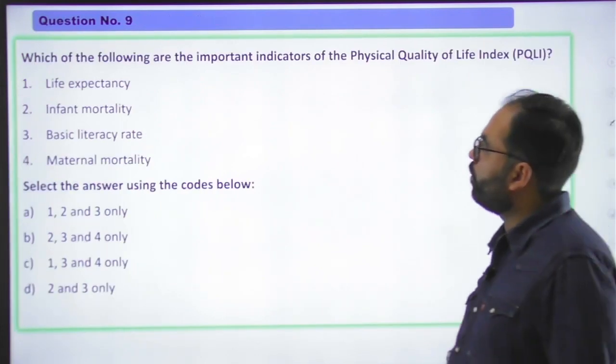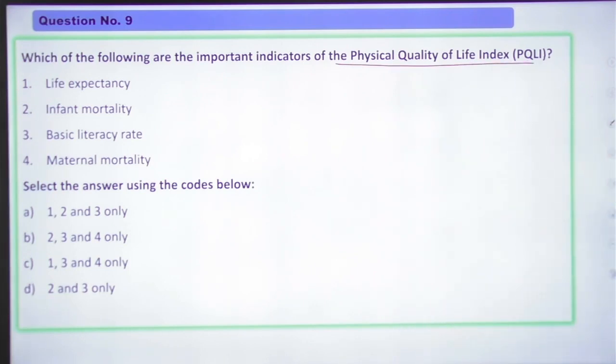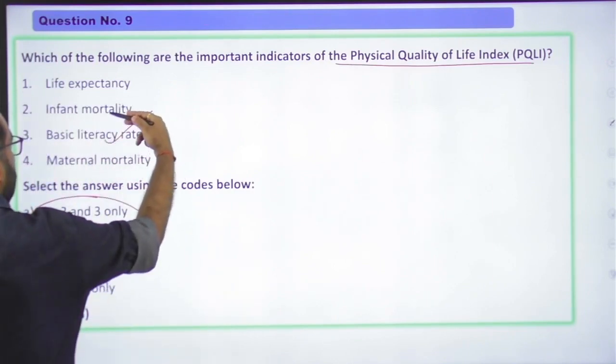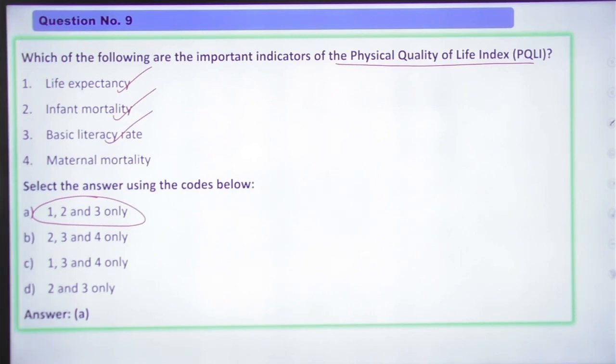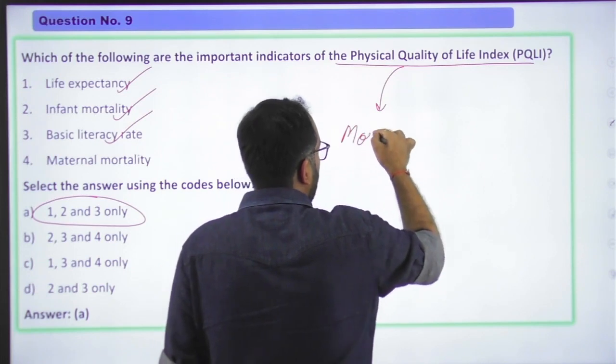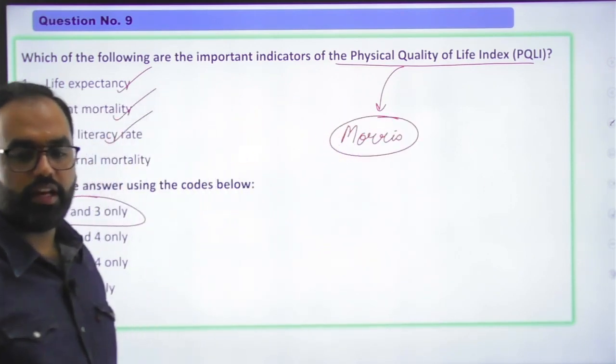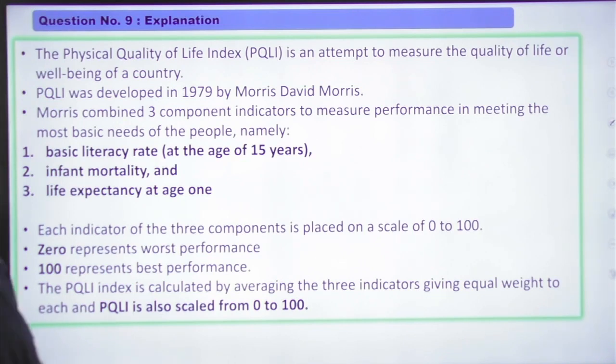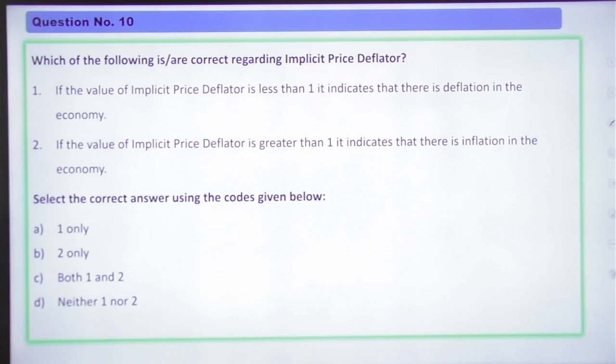Question number nine. Which of the following are important indicators of PQLI or Physical Quality of Life Index? Life expectancy, infant mortality, basic literacy rate, and maternal mortality. Maternal mortality is not part of this. Your answer will be A, that is one, two and three. You have basic literacy rate, infant mortality and life expectancy which are part of PQLI index. These three things we include under Physical Quality of Life Index. And it was developed by Morris David Morris. This is the detailed explanation. It ranges from zero to 100. Zero is worst performance, 100 is the best performance.